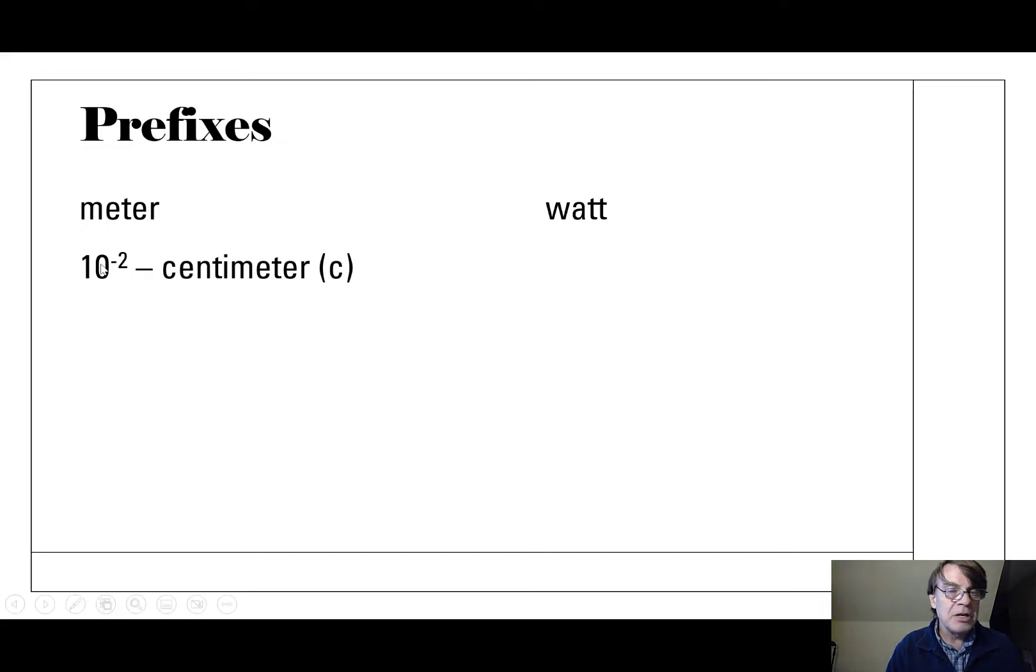Like a centimeter is only about that big. That's 10 to the minus 2 power. What does that mean? That means you move the decimal two places to the left because it's negative 2. So if it's a positive number, you go to the right in spaces. But if it's a negative number, you go to the left in spaces. So 10 to the minus 2 meters is a centimeter. That's 0.01 because you move the decimal two places. So 0.01 is a centimeter.